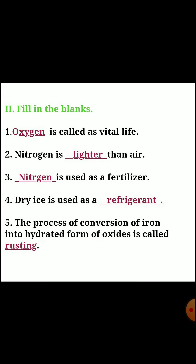Second section: fill in the blanks. First, oxygen is called vital life. Second, nitrogen is lighter than air. Third, nitrogen is used as a fertilizer. Fourth, dry ice is used as a refrigerant. Fifth, the process of conversion of iron into hydrated form of oxides is called rusting.